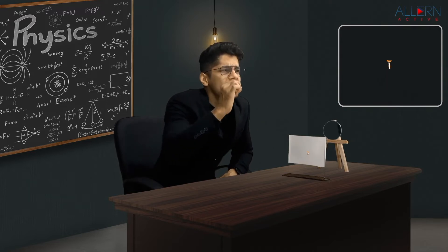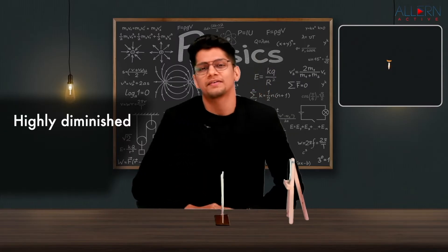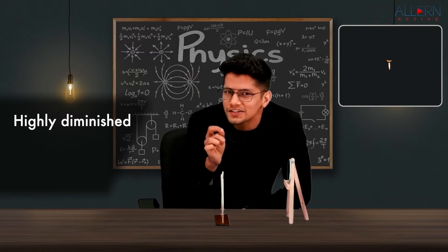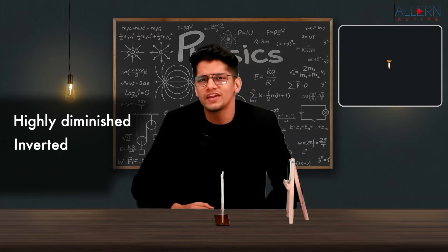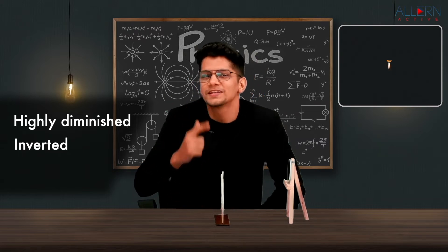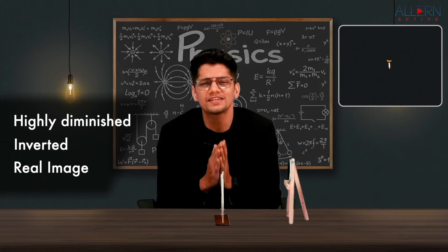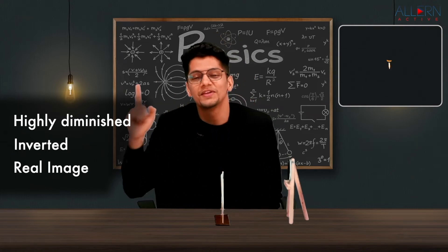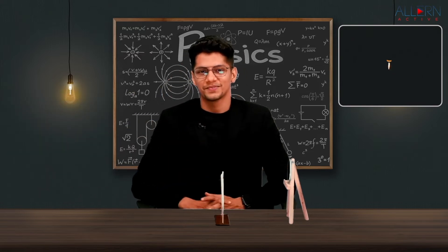The characteristics of this image: it is very very small — you can hardly see the flame of the candle — and the image is inverted. It is obtained on a screen, so it is a real image. Real images are always inverted. So when the object is at infinity, the image is formed at the focus.